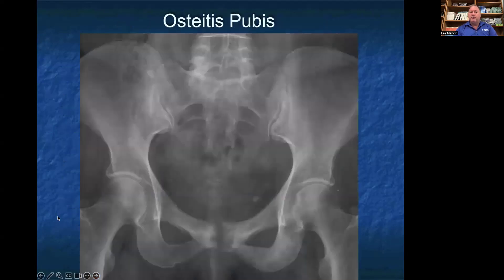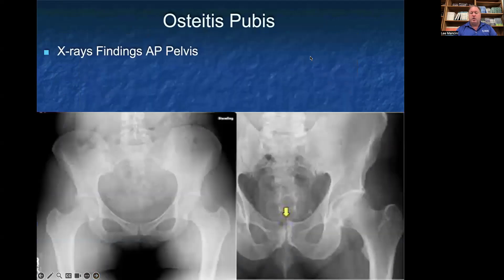Our third and final clinical case for common hip x-ray findings is osteitis pubis. Osteitis pubis is increased sclerotic changes specifically around where the two parts of the right and left pubic bones meet, on either side of the pubic symphysis. On the left you can see a normal AP pelvis view with normal healthy pelvic bone, and on the right, where the yellow arrow is pointing, you can see increased sclerotic changes and irregularities — the bone is much more bright white.